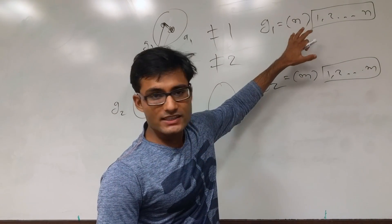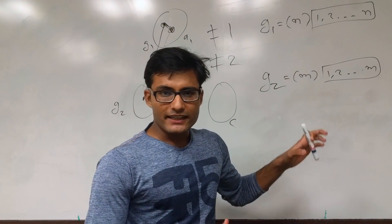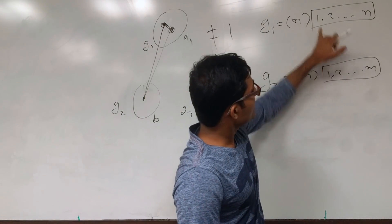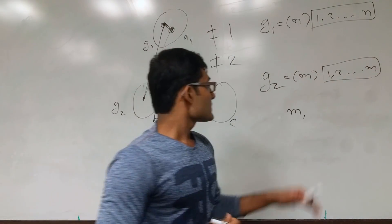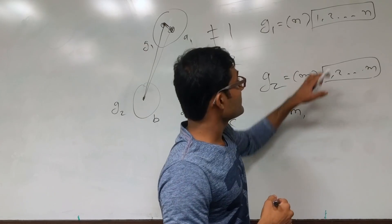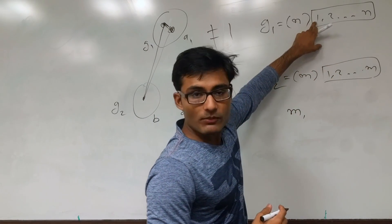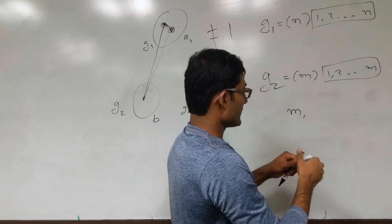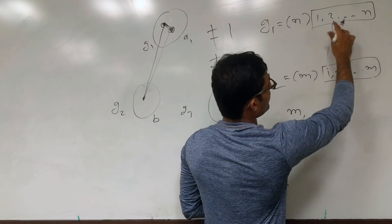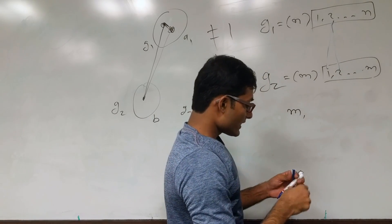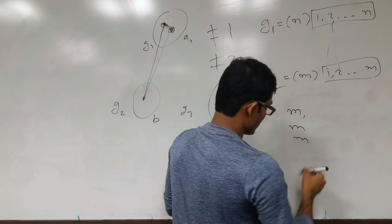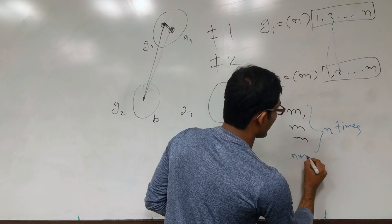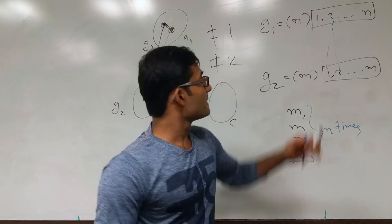Now assume we have only one edge from group 1 to group 2. This edge can take different forms: from node 1 to node 1, node 1 to node 2, ... node 1 to node M. So there are M different possible graphs where the edge starts from node 1. Likewise, we can have an edge from node 2 to node 1, node 2 to node 2, ... node 2 to node M. So we will have M choices repeated N times — that is N×M possible graphs when there is exactly one edge.